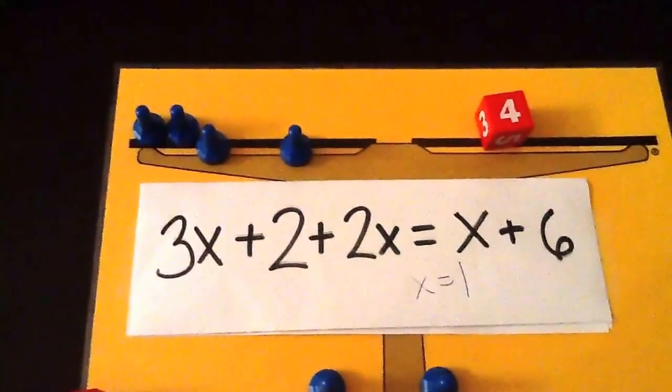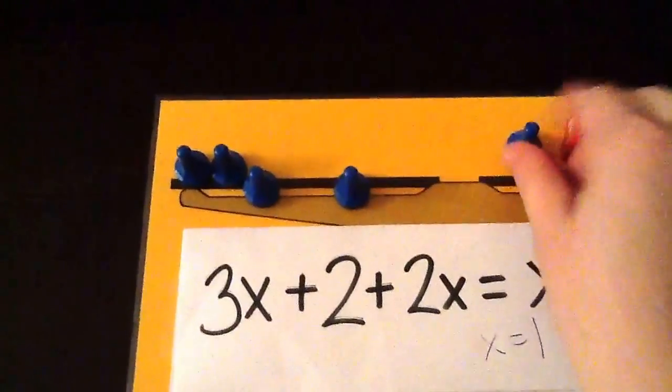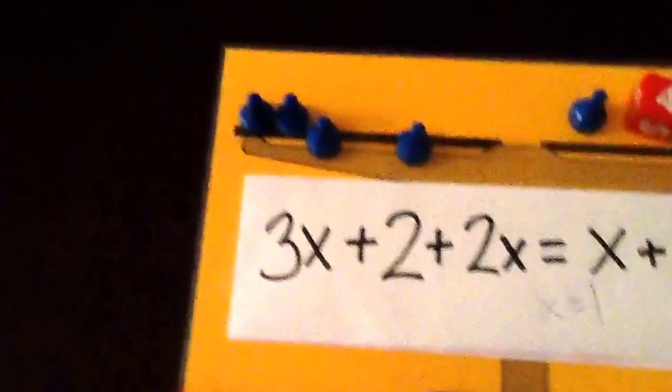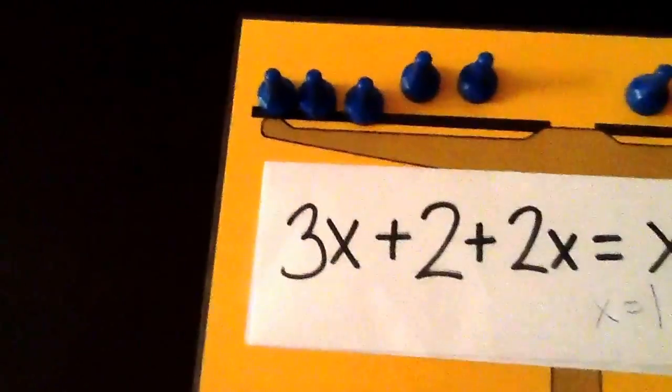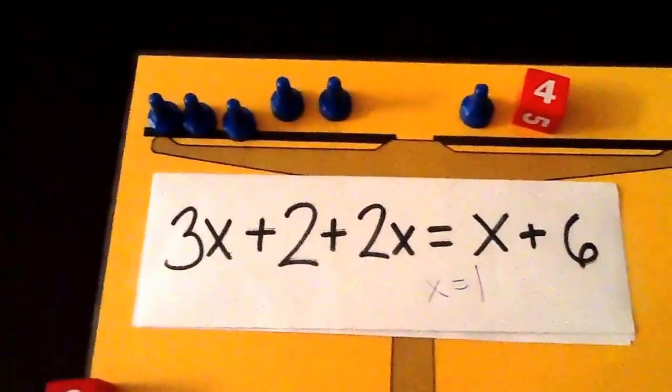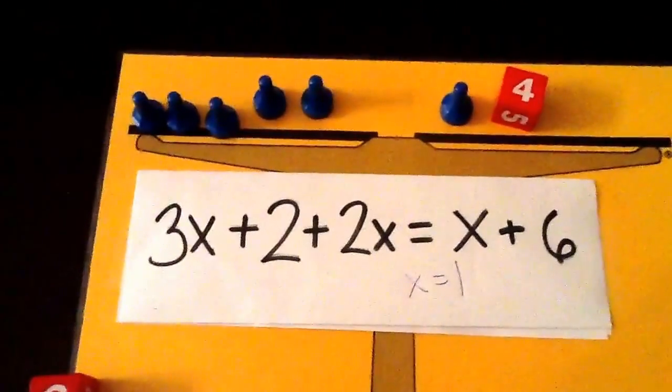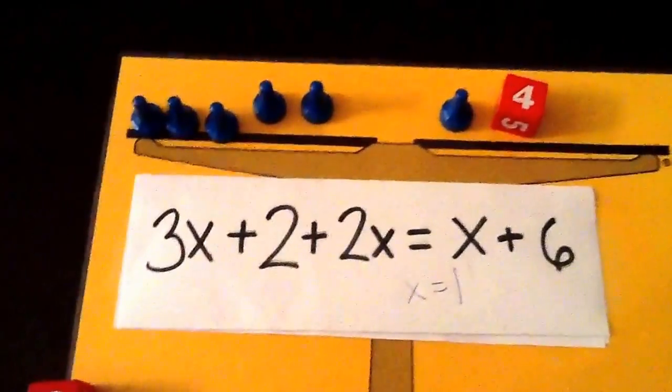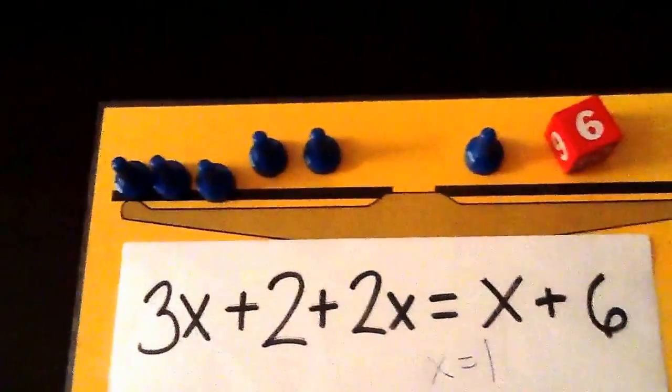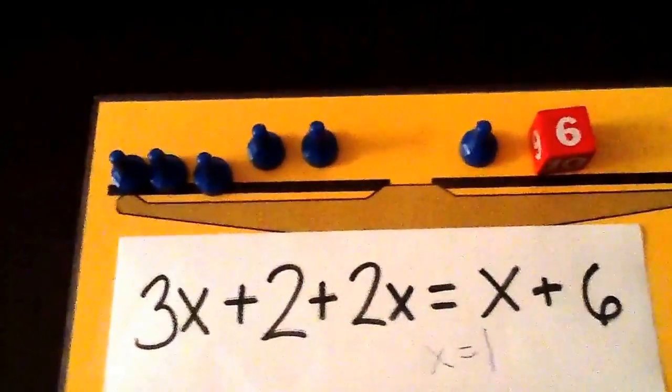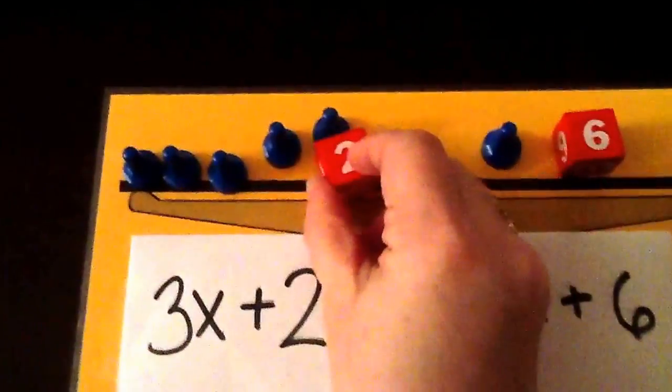And now we need to do a check. So we're going to go back, put the original pieces back on. We have a pawn on each side. Okay, we have 5 pawns on the left altogether. We need to add 2 back on each side. So we're going to change this 4 to a 6, and then we need to put 2 on this side.